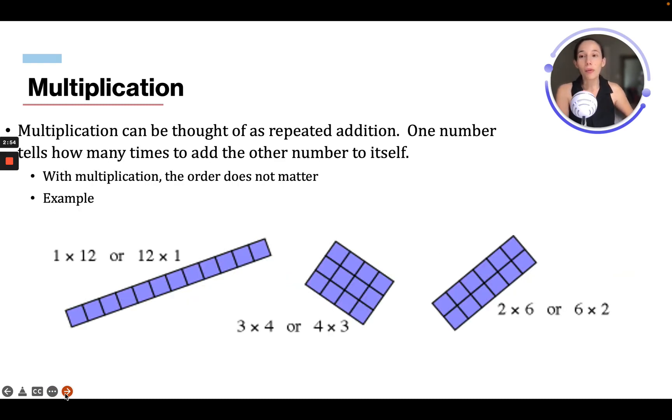Then we have multiplication. So multiplication can be thought of as repetitive addition. One number tells how many times to add the other number to itself. With multiplication, the order does not matter. So example, 1 times 12 will equal 12, or 12 times 1 will also equal 12. And if we look at that with blocks, you can see 12 blocks here, and to multiply it would be how many rows this way. So we only have one. So that's gonna give us 12.